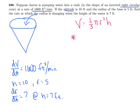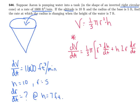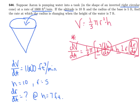I'm going to play devil's advocate and differentiate right away, leaving (1/3)π out front and using the product rule on r² and h: dV/dt = (1/3)π [r² · dh/dt + h · 2r · dr/dt]. The problem is there are too many unknowns — we don't know dh/dt and we don't know dr/dt. So I'm going to scratch that whole idea and backtrack.